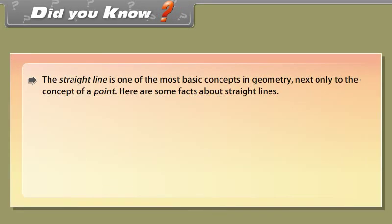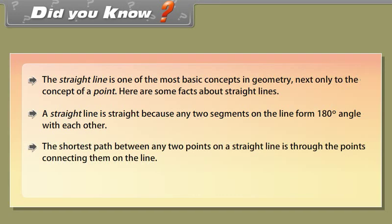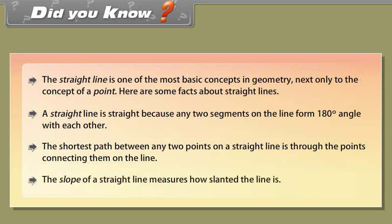Did you know? The straight line is one of the most basic concepts in geometry, next only to the concept of a point. A straight line is straight because any two segments on the line form a 180-degree angle with each other. The shortest path between any two points on a straight line is through the points connecting them on the line. The slope of a straight line measures how slanted the line is.